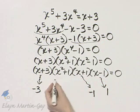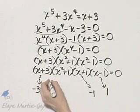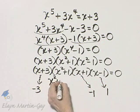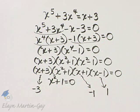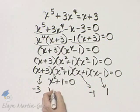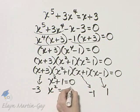I'd like to concentrate on this factor, x squared plus 1 equal to zero, and make sure you can handle this factor equal to zero. I will move the 1 over by subtracting 1 from both sides, and I'll have x squared is equal to negative 1.